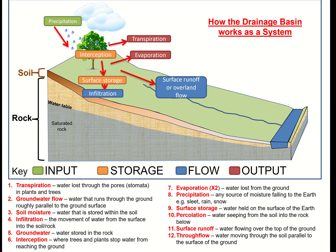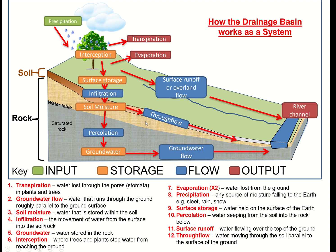Water might infiltrate down into the soil if it's permeable, becoming soil moisture. Some of that soil moisture might percolate down into the rock and saturate it — the water table represents the upper level of that saturation. Whether the rock has pore spaces and is permeable determines how much water it allows in. Some water will flow through the soil down to a river, and some groundwater will also flow down into the river.